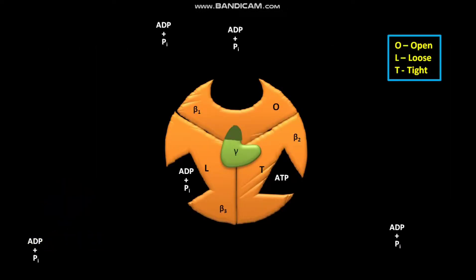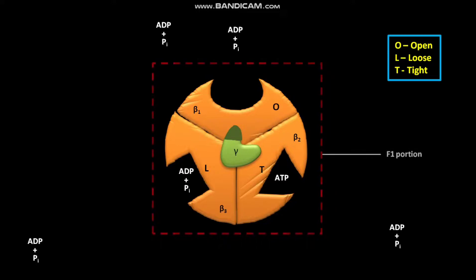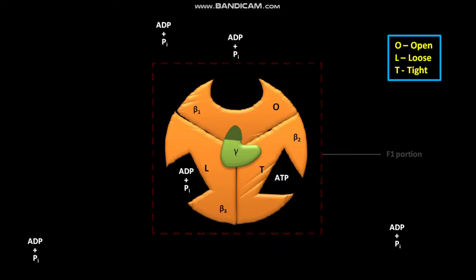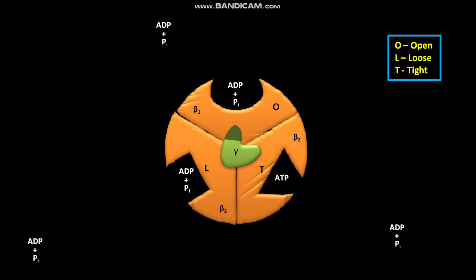This view is looking up at the F1 portion of ATP synthase from the membrane surface. During the ATP synthesis cycle, first of all, ADP and PI bind loosely to one of the three beta subunits of F1. Arbitrarily, this beta subunit is designated as beta1. The nucleotide binding site of the beta1 subunit is present in the O, or open, conformation.